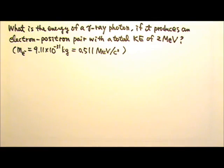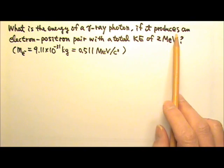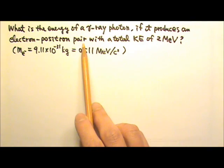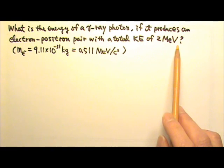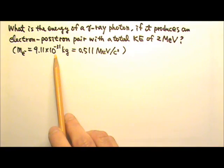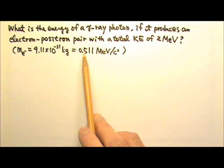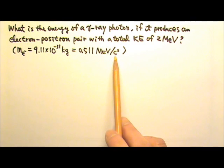Now let's look at an example. What is the energy of a gamma ray photon if it produces an electron-positron pair with a total kinetic energy of 2 MeV? The mass of an electron is 9.11 times 10 to the negative 31st kilograms, which is also 0.511 MeV over c squared.